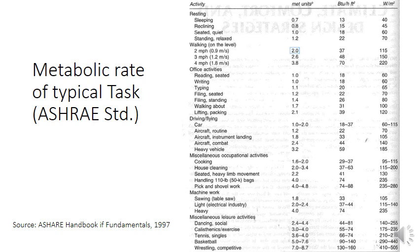This table is taken from the ASHRAE Standard Handbook of Fundamentals 1997, providing standard metabolic rates. The first column is activity, the second is metabolic rate in met units, then BTU/h, then W/m². For resting/sleeping the minimum activity is 0.7 met, equal to 40 W/m². Sitting quietly is 1 met; standing is 1.2 met. Walking at lower and higher speeds ranges from 2 to 3.8 met. Reading or writing sitting is 1 met; lifting or packing is approximately 2.1 met.